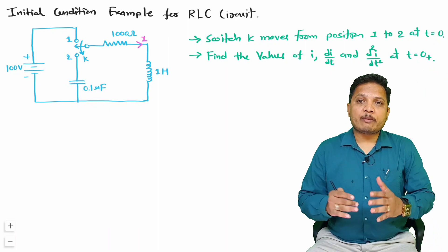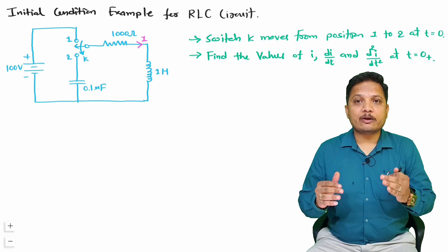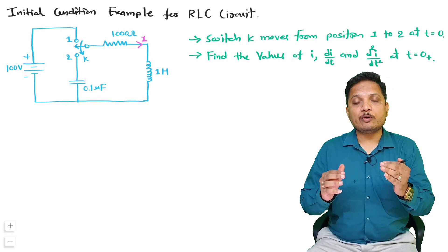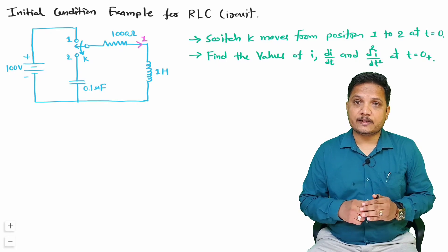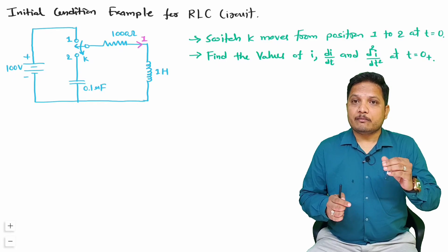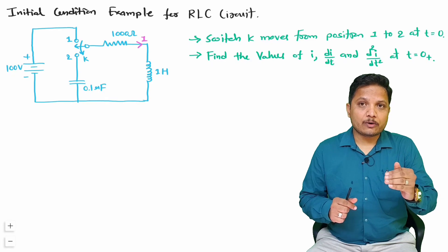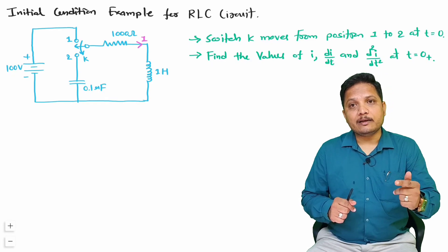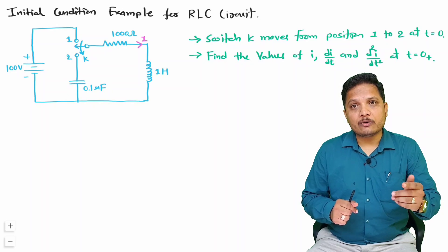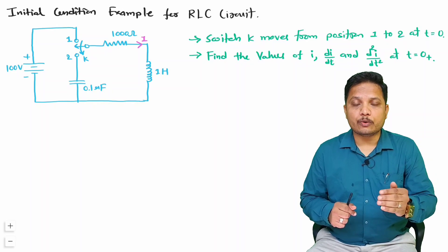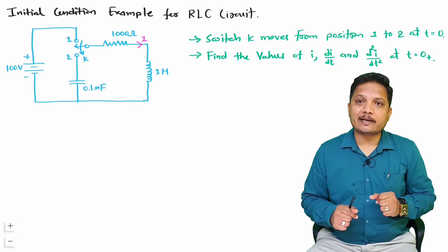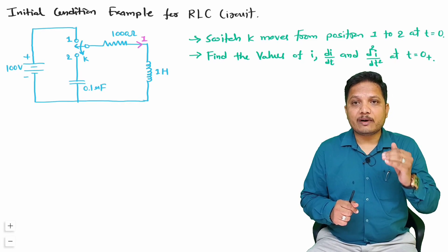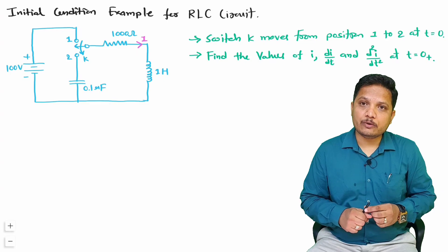Whenever you have this type of question based on movement of a switch, you will have to identify different cases. So here, before t equals 0, the switch was at position 1, and after t equals 0, the switch is at position 2. The first case I will consider is at position 1, before t equals 0.